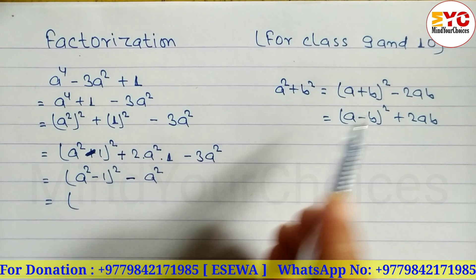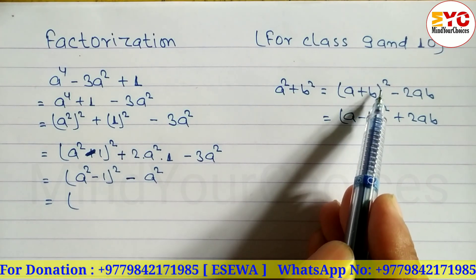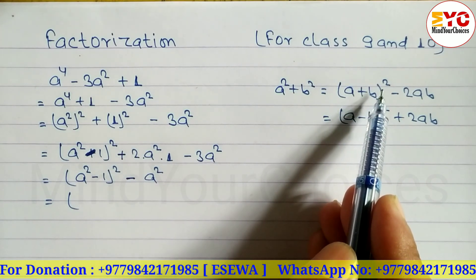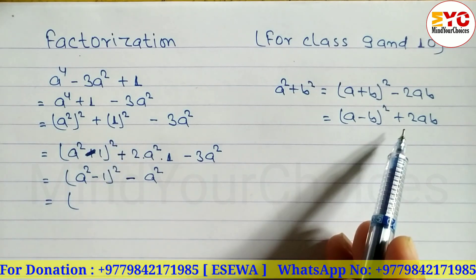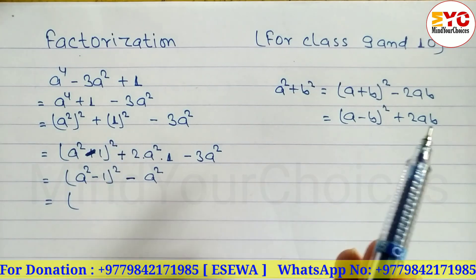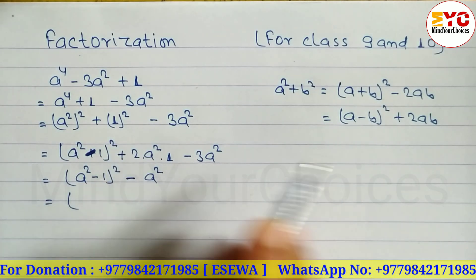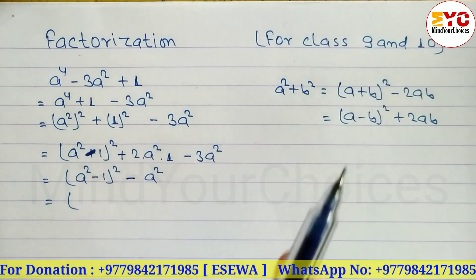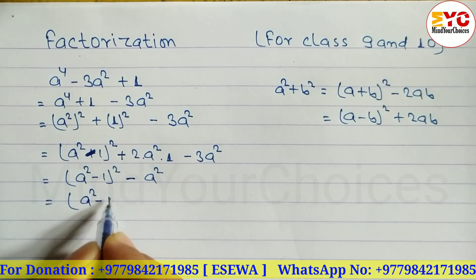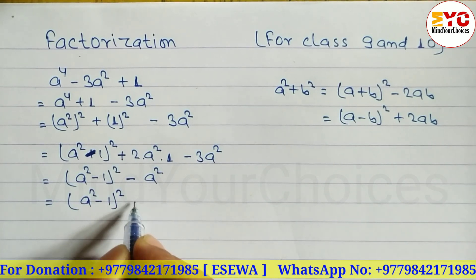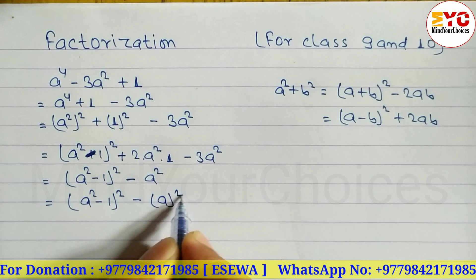In the previous video we used the other formula to convert into the form of a² minus b². According to the question, we have to choose the appropriate formula — you have to learn both formulas. So now we have (a² minus 1)² minus (a)², which is in the form of a² minus b².